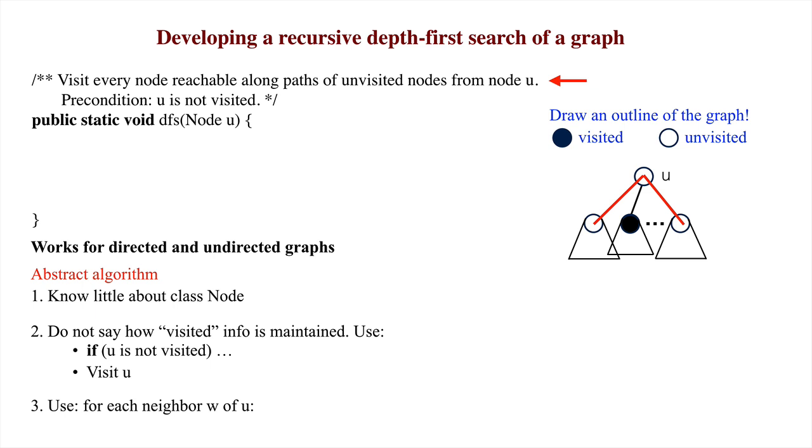We now write the body of the method. The specification says to visit every node reachable along a path of unvisited nodes from node U. It also says that U is unvisited. Looking at the graph outline, therefore, the first step is to visit U.